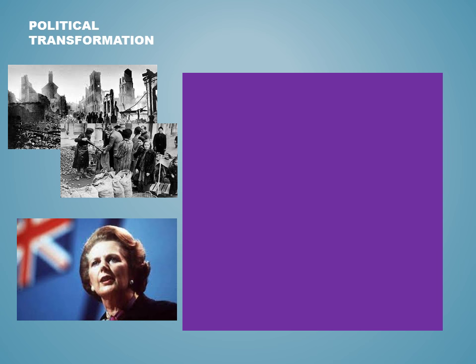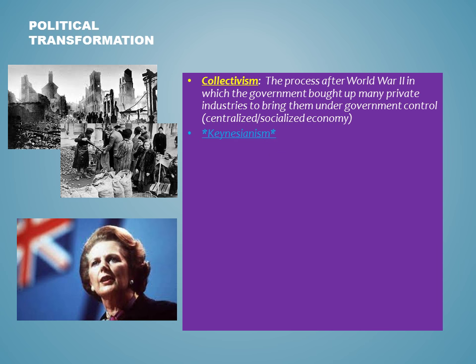The United Kingdom, like many other European countries, was devastated by the effects of World War II. Thus, the Labour government that came into place in the late 1940s and into the 1950s began purchasing up many formerly privately owned industries and putting them under government control to try to steer the economy in a more centralized and socialized way through a policy known as collectivism. It rested on the old economic principles of Keynesianism that thought that the government could actually steer economic prosperity.